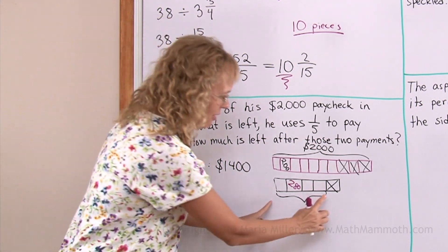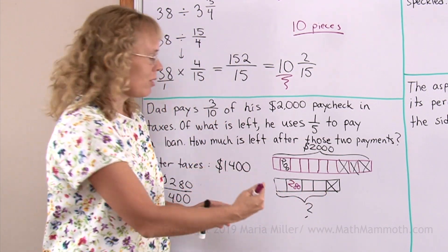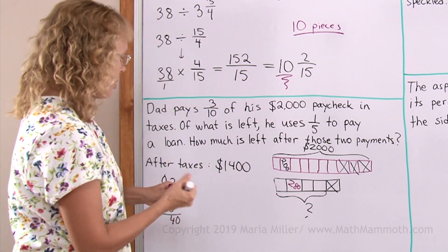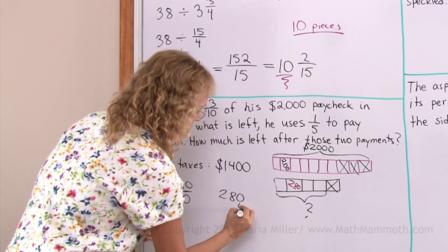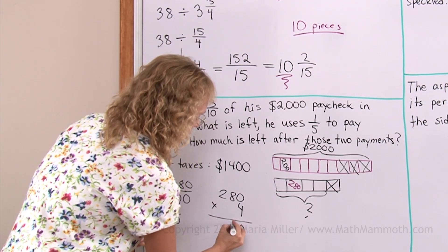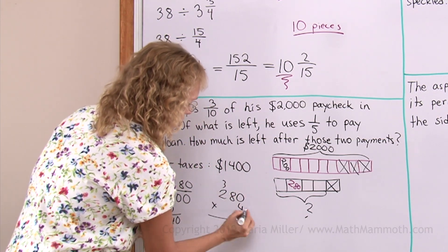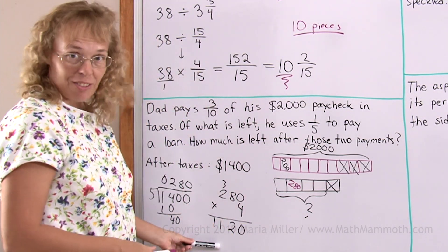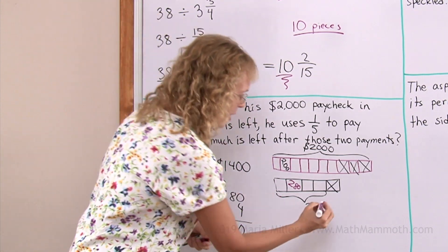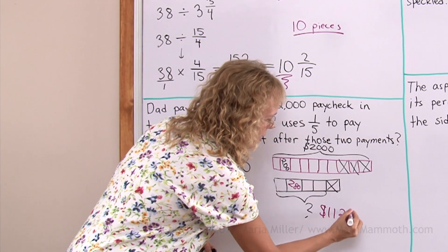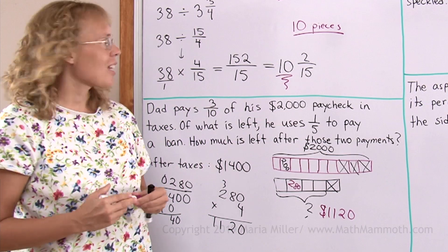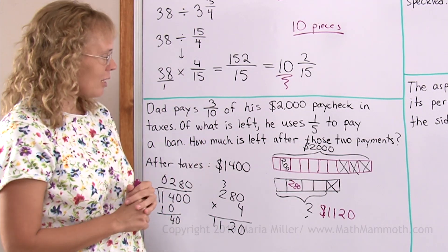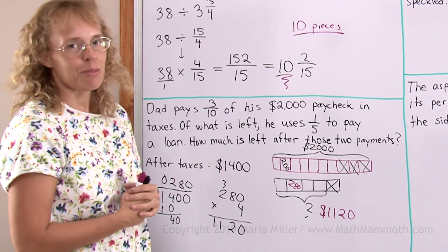And we can see what he has left from the diagram is four of those blocks. So four times two hundred and eighty. Zero and thirty-two and eleven. So that is our final answer now. We already have it. It is one thousand one hundred and twenty dollars is left for Dad after those payments. Just a little over half of his paycheck.